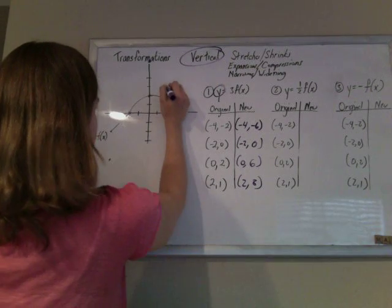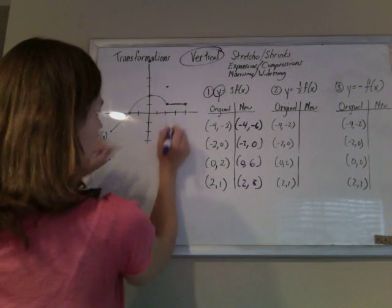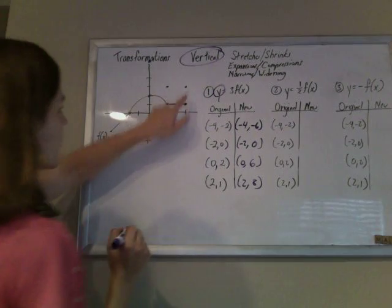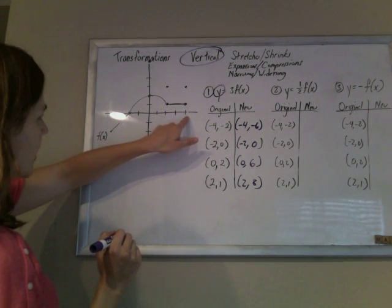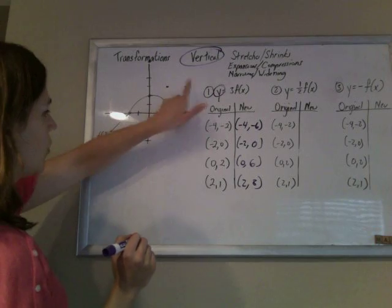2, 3, so 1, 2, 3. I guess I could have done this point as well. That's going to be up there. So that's 4, 1, and it became 4, 3.